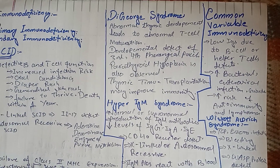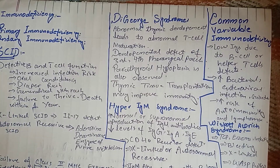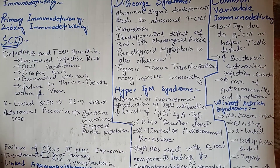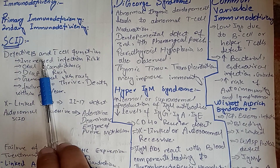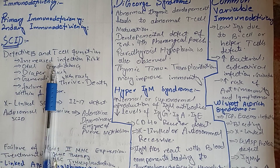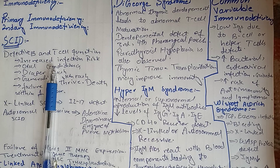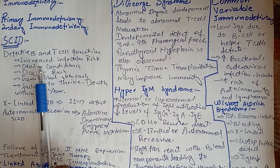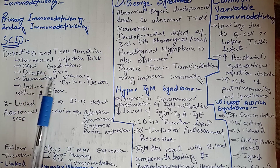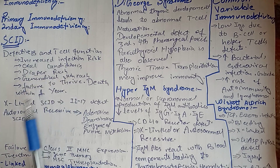SCID — Severe Combined Immunodeficiency — is a congenital condition with defective B and T cell function. There is no properly functioning humoral immunity or cell-mediated immunity. Both immune responses are compromised, leading to increased infection risk, oral candidiasis, and diaper rash or generalized skin rash.